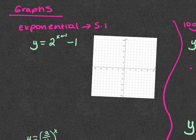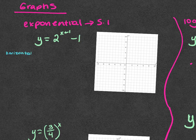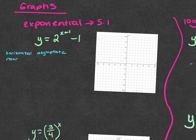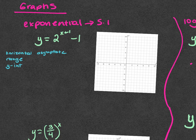With exponentials, remember you're going to not only graph but also find your horizontal asymptote, find the range, and find the y-intercept. For both examples we're going to do today we'll do both. Remember that the horizontal asymptote relates to your vertical shift on exponential functions. The vertical shift happens after the exponent.